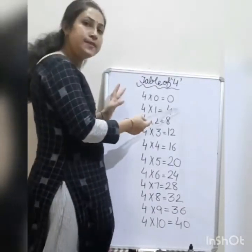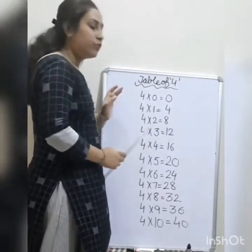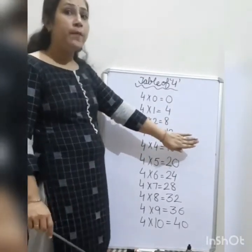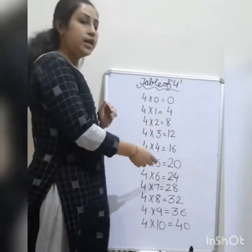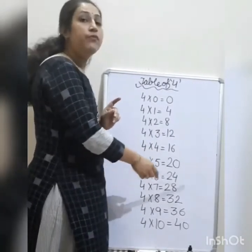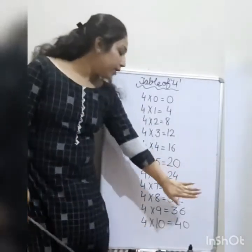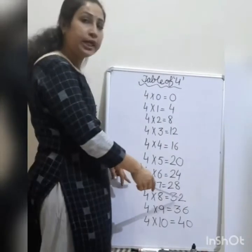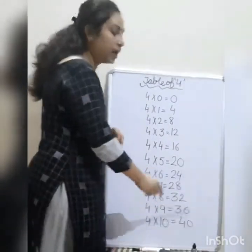4 0's are 0, 4 1's are 4, 4 2's are 8, 4 3's are 12, and 4 4's are — tell me, hurry up. 4 4's are 16. 4 5's are 20, 4 6's are 24, 4 7's are 28, and 4 8's are — tell me. 32. Very good. 4 8's are 32, 4 9's are 36, and 4 10's are 40.